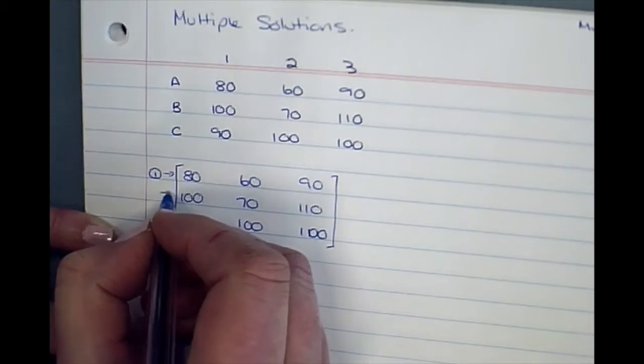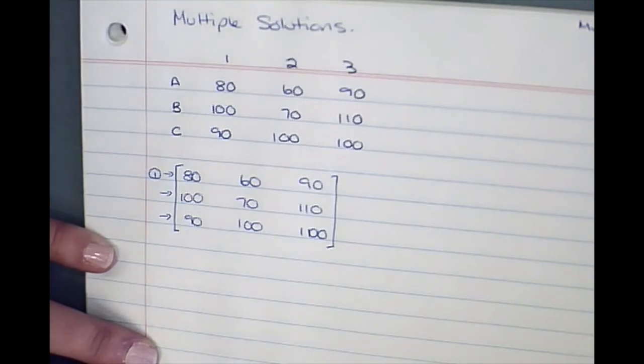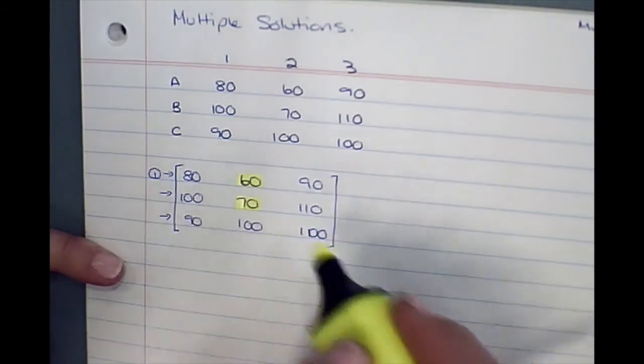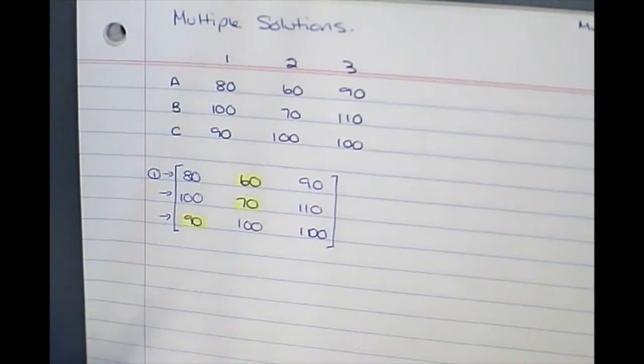Step number two, we're working in rows. We're going to find the smallest number in each row and then we're going to subtract it.